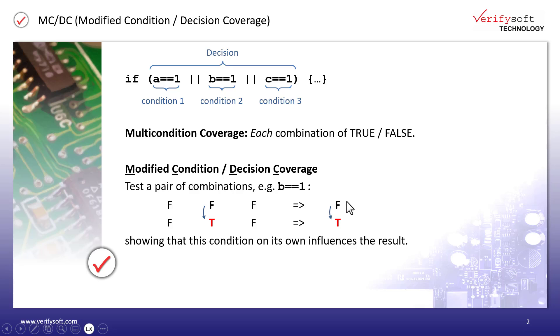In a second test case, we would just change the value of the variable B so that it is equal to 1. Then, our second condition would evaluate true and due to the logical OR operation, the overall decision would also turn to true. These two tests would then be a valid pair to show MCDC coverage for the condition B as the modification of condition B on its own influences the result of the overall decision.